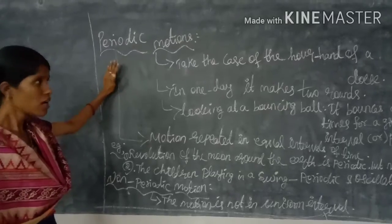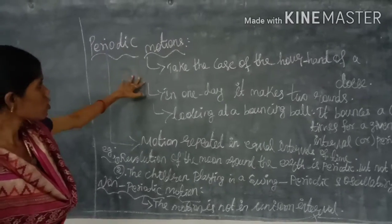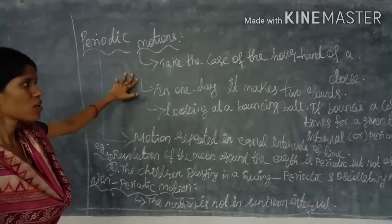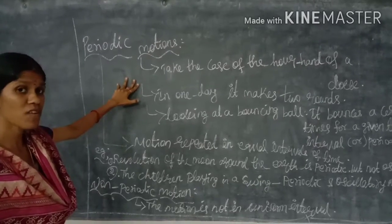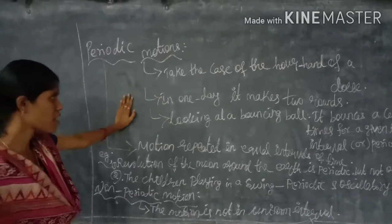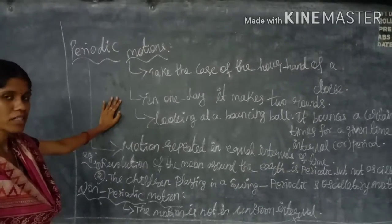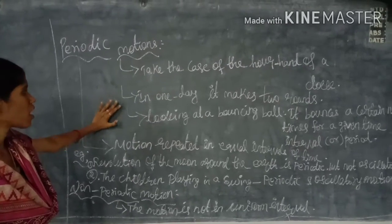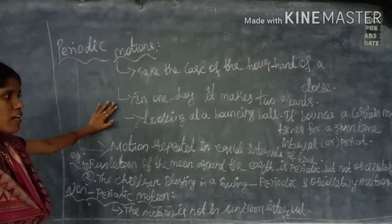Next is periodic motion. This is motion that occurs according to a time interval — that's why it is called periodic motion. For example, take the hands of a clock. A clock has three hands — one for seconds, one for minutes, and one for hours. In one day, the hour hand makes two rounds, that is once every 12 hours.